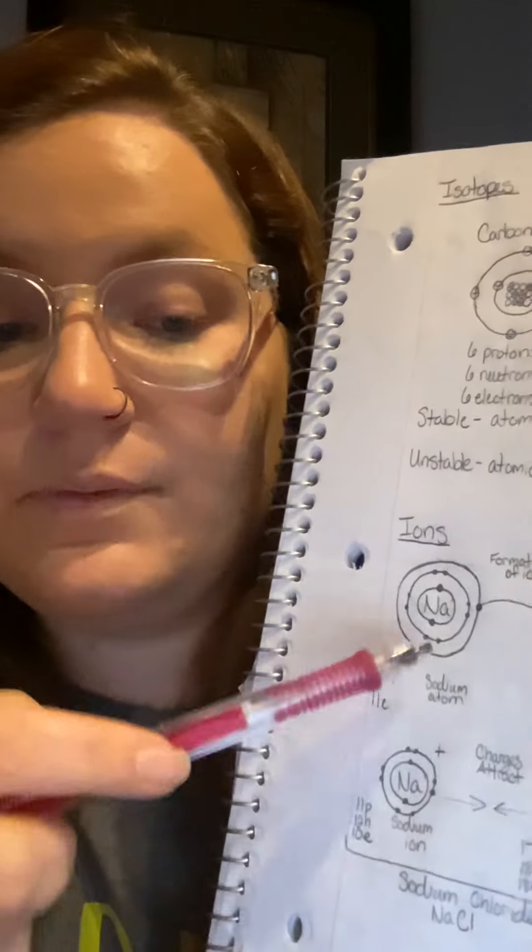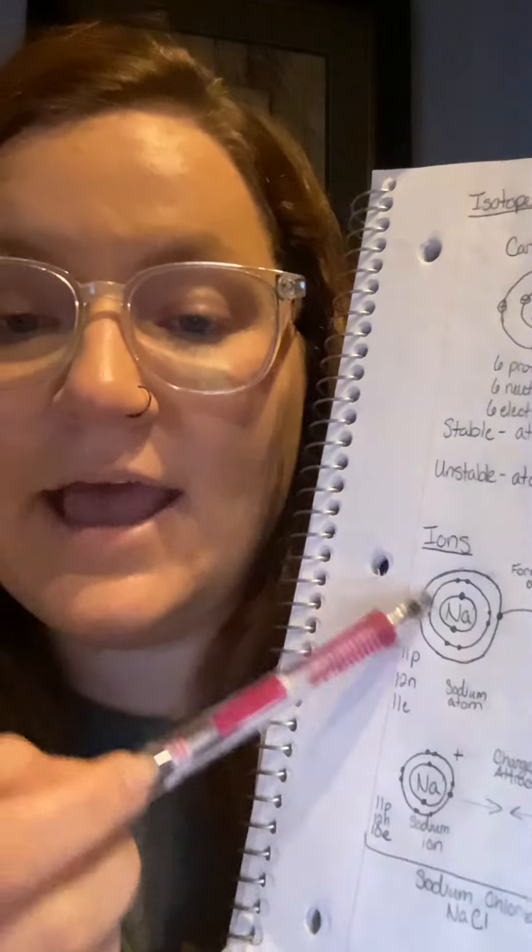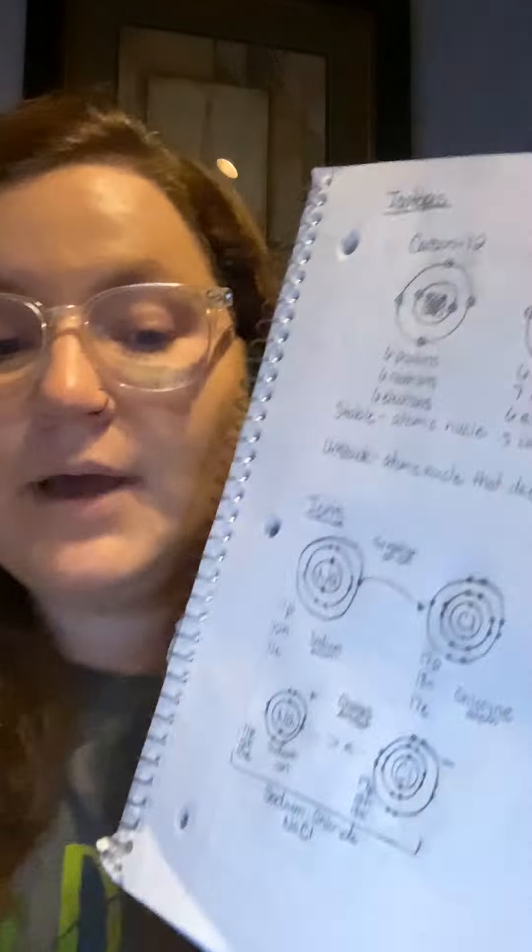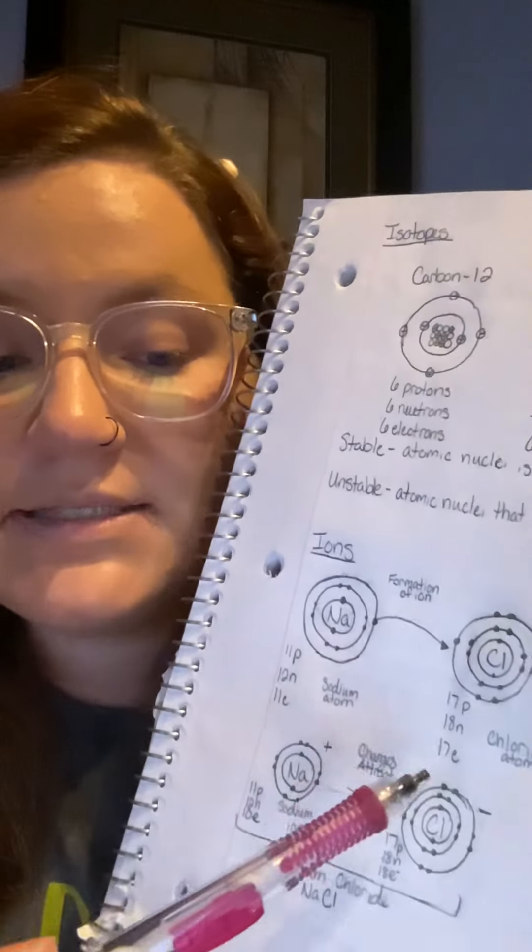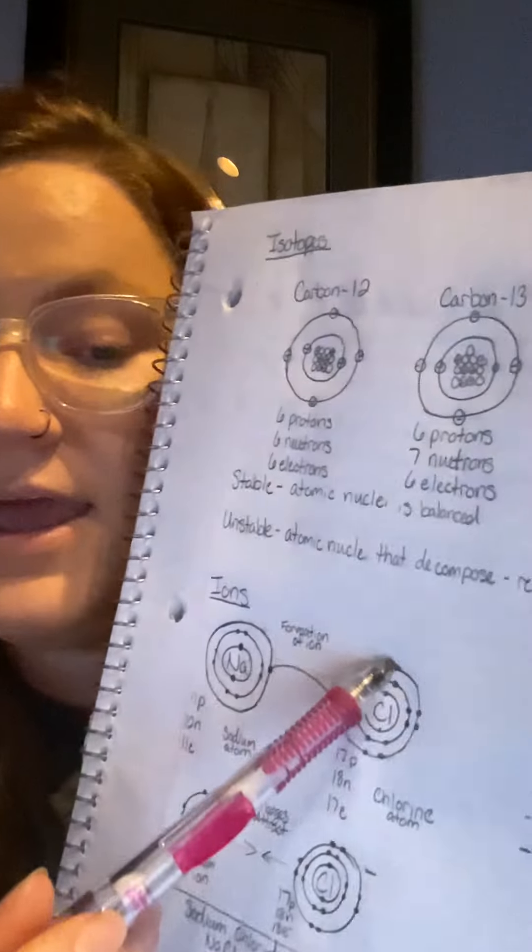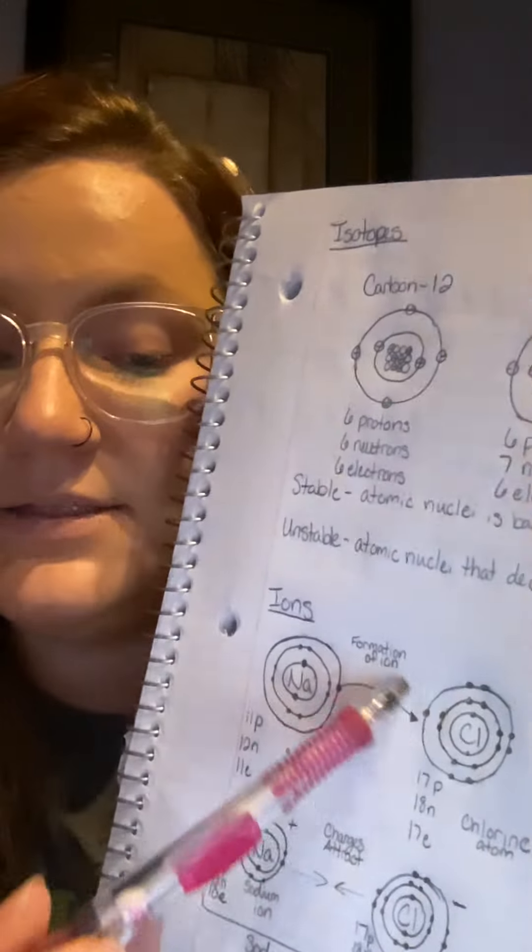So if you were to set up the Bohr model, that outermost shell only has one valence electron. With chlorine, you have 17 protons, 17 electrons, and then 18 neutrons. Again, that model shows that there would be seven valence electrons.